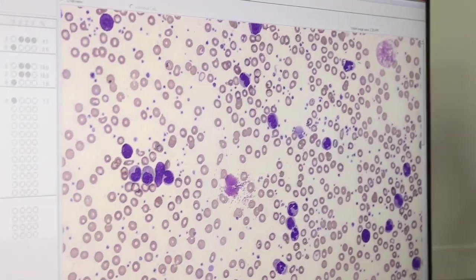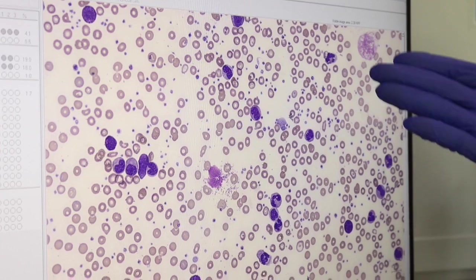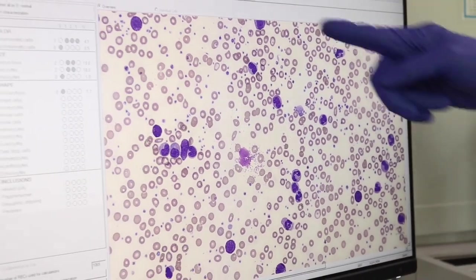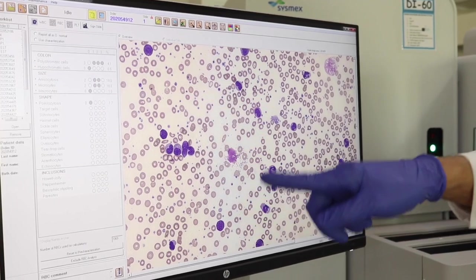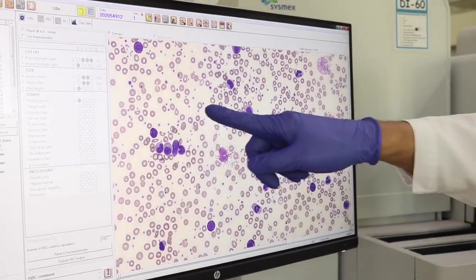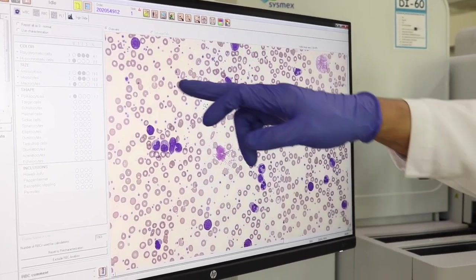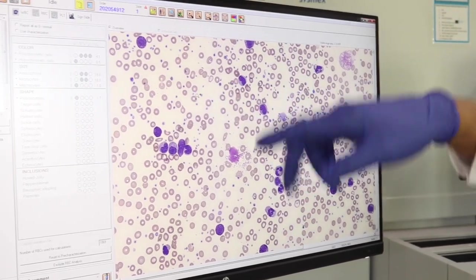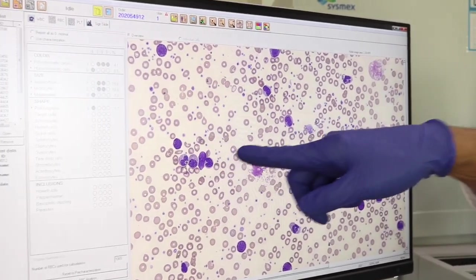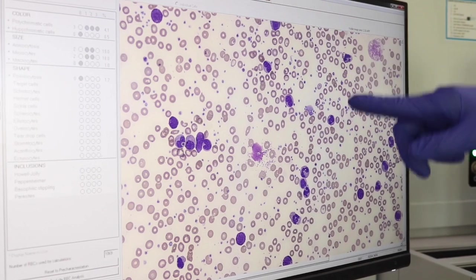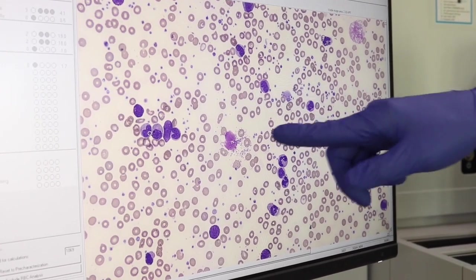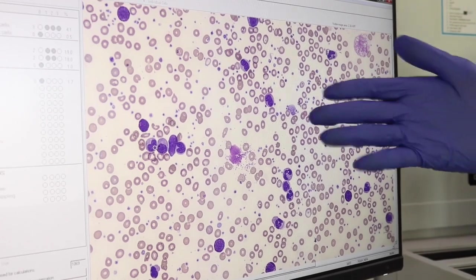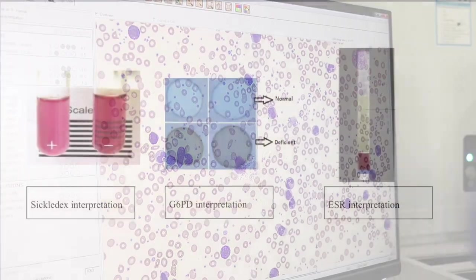This is how your finished product looks when you view the blood film under the microscope. As you can see, after staining, all your cells are well differentiated. You have your red blood cells and different white blood cell populations. Over time, you'll be able to know what these cells are.